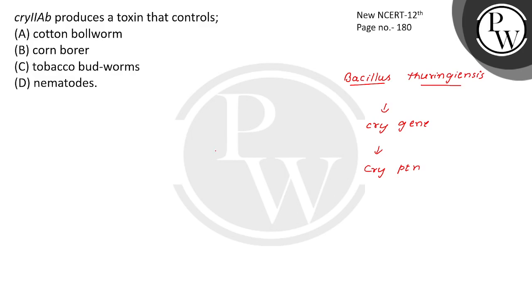Cry2AV produces a toxin that controls it. There are different cry genes: Cry1AC, Cry2AV, Cry2AB, and Cry1AB.